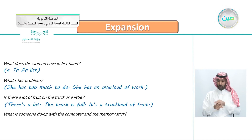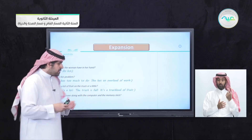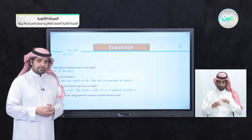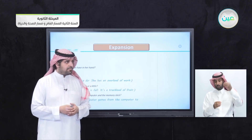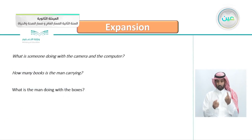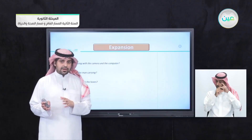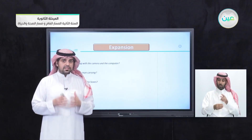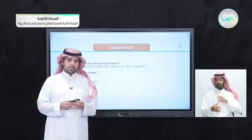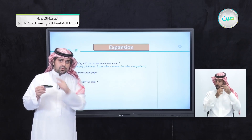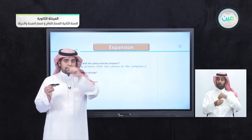What is someone doing with the computer and the memory stick? When you look at the picture of the laptop and the memory stick, what is he doing? They are downloading computer games from the computer to the memory stick — so this is downloading, to download something from the internet. What is someone doing with the camera and the computer? They're uploading pictures. If you're moving files from your device — a camera or USB — to the computer, this is upload. The other way around is download.